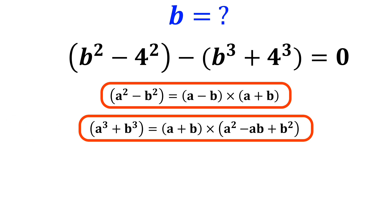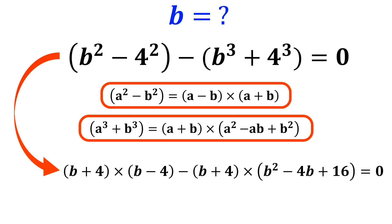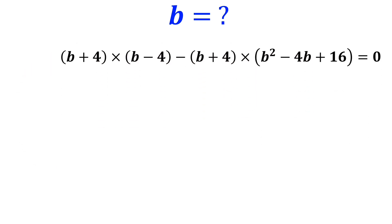Now we write the equation as b plus 4 times b minus 4, minus b plus 4 times b squared minus 4b plus 16, is equal to 0.